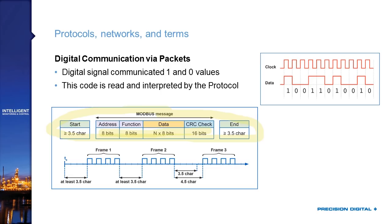Devices string all those ones and zeros together first into a Modbus message and then into an entire Modbus packet. The Modbus protocol explains how to decode those ones and zeros. A device reads the incoming bits and identifies the start characters, a Modbus address, a function code, and a bunch of data. The ones and zeros are detected, strung together, and that gives commands back and forth between different Modbus devices.